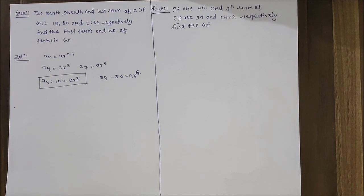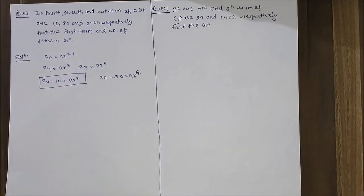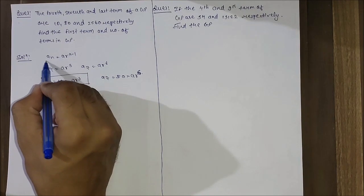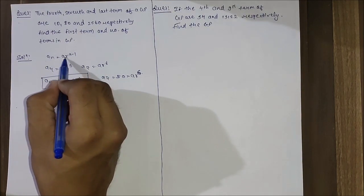Welcome back. In this series of video lectures on geometric progression, we have discussed some numericals in the last lecture. Let's discuss some more numericals in this lecture. Question number one: the fourth, seventh, and last term of a GP are 10, 80, and 2560 respectively.